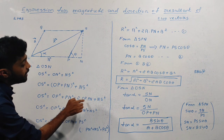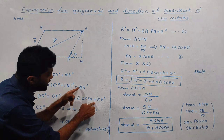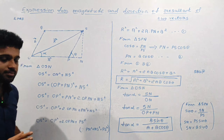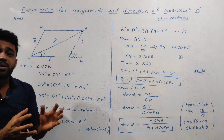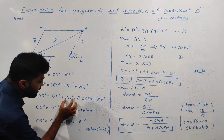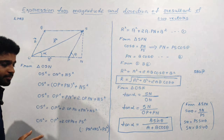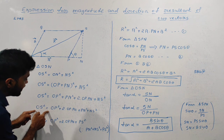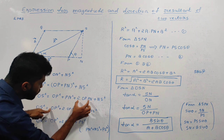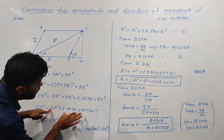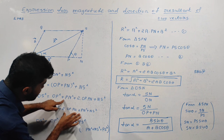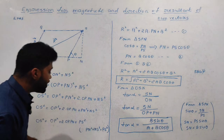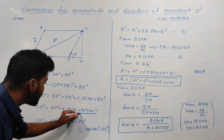So OS squared is equal to OP squared plus PN squared plus 2 times OP into PN plus NS squared. We now rearrange and group the terms on the left-hand side: OS squared equals OP squared plus 2 times OP into PN plus PN squared plus NS squared.